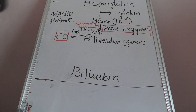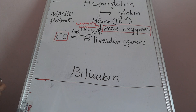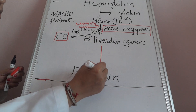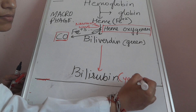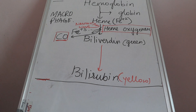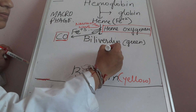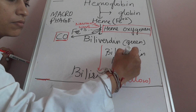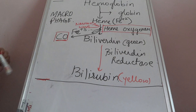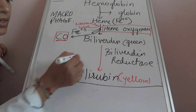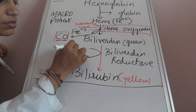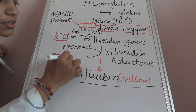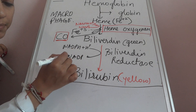The structural change which biliverdin undergoes to form bilirubin is that the methanol bridges are broken down between ring A and B. Biliverdin forms bilirubin, a yellow colour pigment, in the presence of the enzyme bilirubin reductase. This bilirubin reductase again requires NADPH + H⁺, and in result it forms NADP⁺.